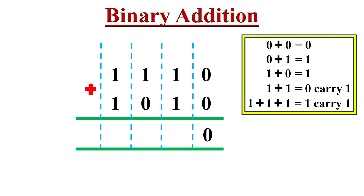In the next column, the digits are 1 plus 1, which gives answer 0 with a carry of 1 to the next column. Now moving to the next column, we have a carry of 1 from the previous column addition and digits 1 and 0 in this column. Hence, here we have to add 1 plus 1 plus 0, which equals 0 with 1 as carry to the next column.